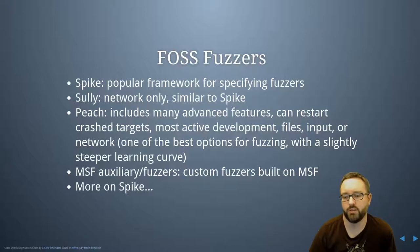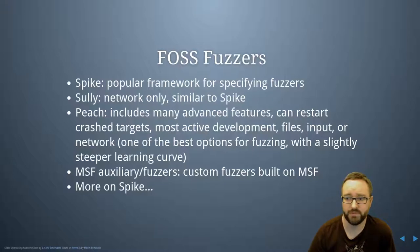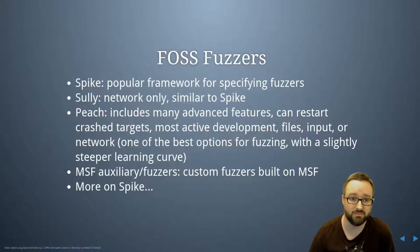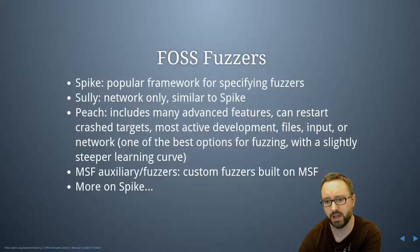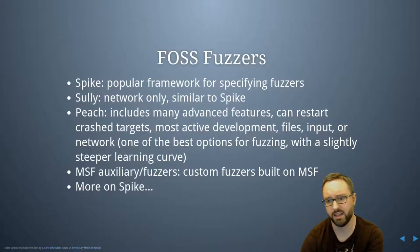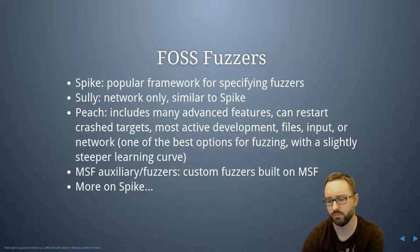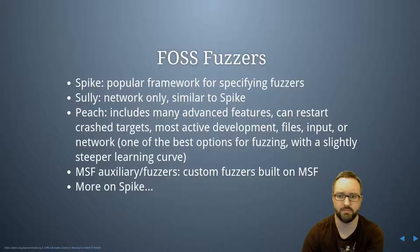There are a number of open-source fuzzers you could use. Spike is a popular framework for specifying fuzzer scripts — it's good and popular, but not very well documented, and it's been around for a long time. Sulley is a network-only fuzzer, similar to Spike. Peach has a lot of advanced features including the ability to restart crash targets, so it can automate the target end as well. It's actively under development and can fuzz files, standard input, and network inputs.